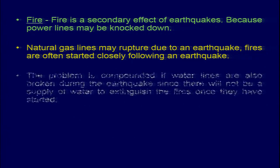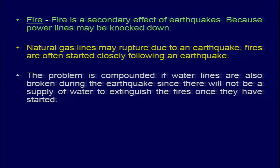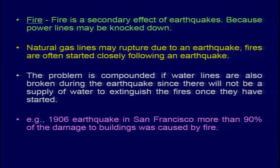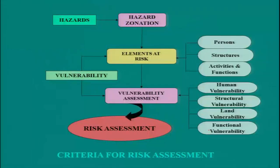Natural gas line ruptures, problems compounded by water line breaks, breaching of dams or canals can result in local flooding. The 1906 San Francisco earthquake is an example where more than 90 percent of the damage to buildings was caused by fire. These secondary effects may seem trivial but need to be taken into consideration in risk assessment.